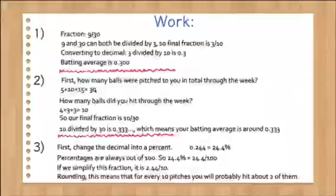And for the second problem, first we're going to find out how many balls were pitched to you in total throughout the week. So we add up 5 plus 10 plus 15, and that equals 30. And then how many balls did you hit in total throughout the week? That's 4 plus 3 plus 3, which is 10. And our final fraction is 10 over 30.